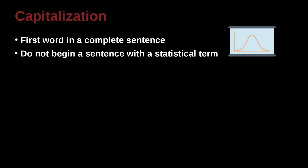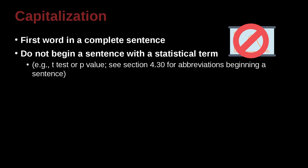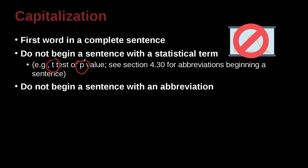Do not begin a sentence with a statistical term — we're going to talk more about this later — but for example, you would not begin your sentence with a t-test or p-value, because if you did that, you would have to capitalize t or p. But t and p should not be capitalized in this case, because they are statistical symbols.